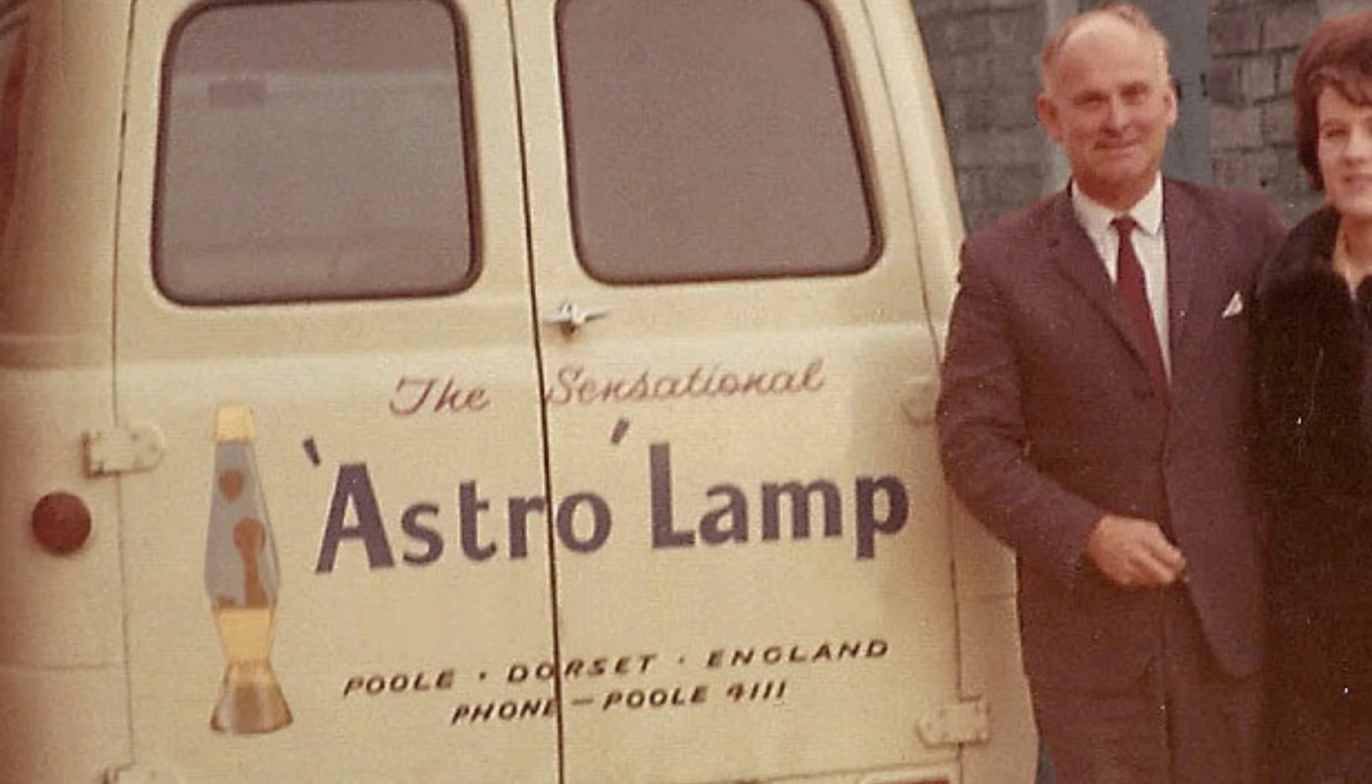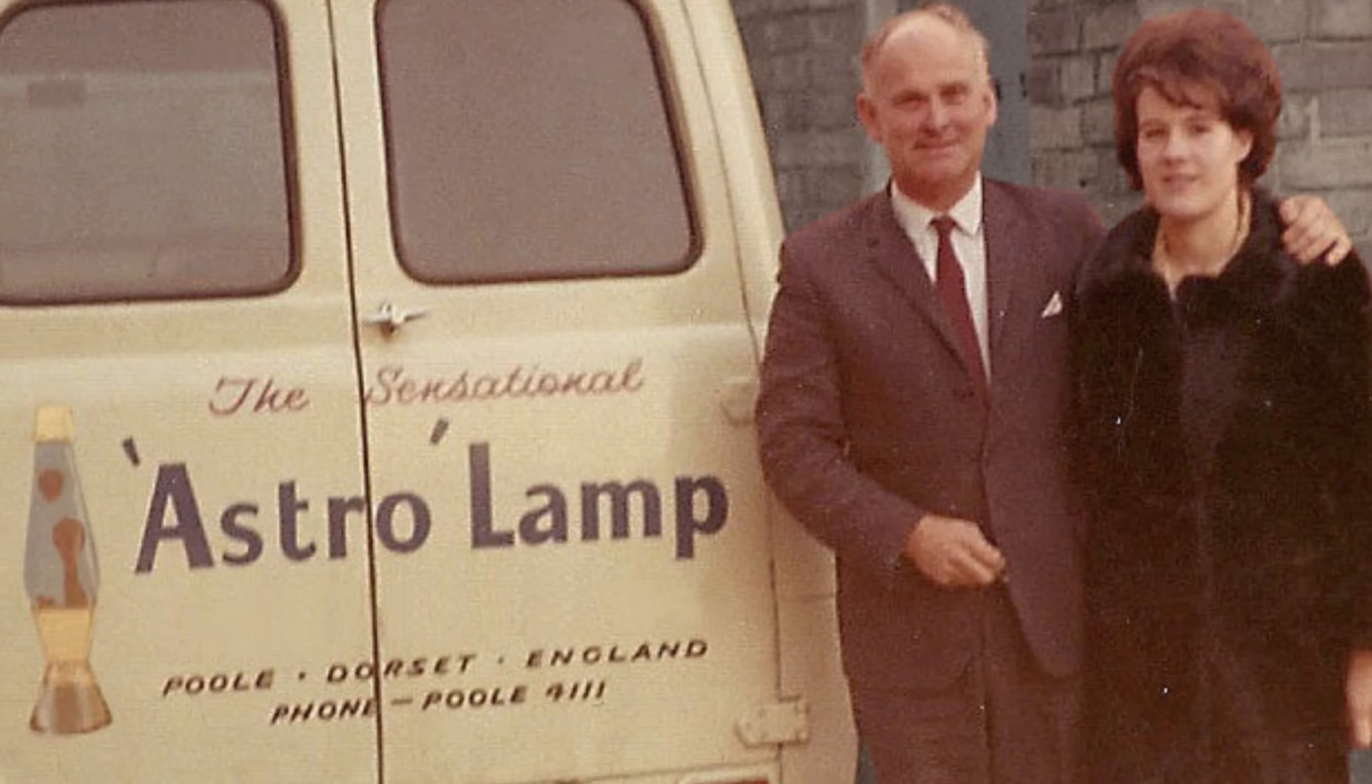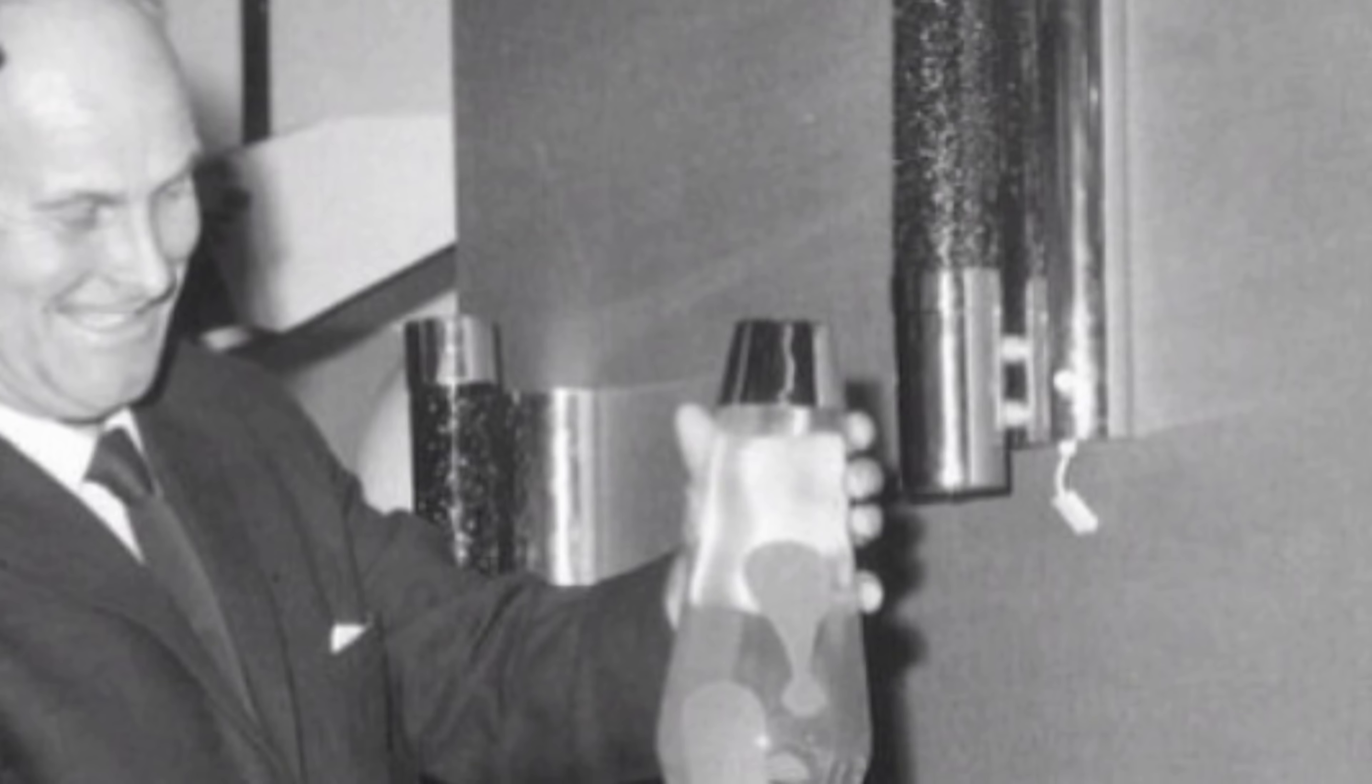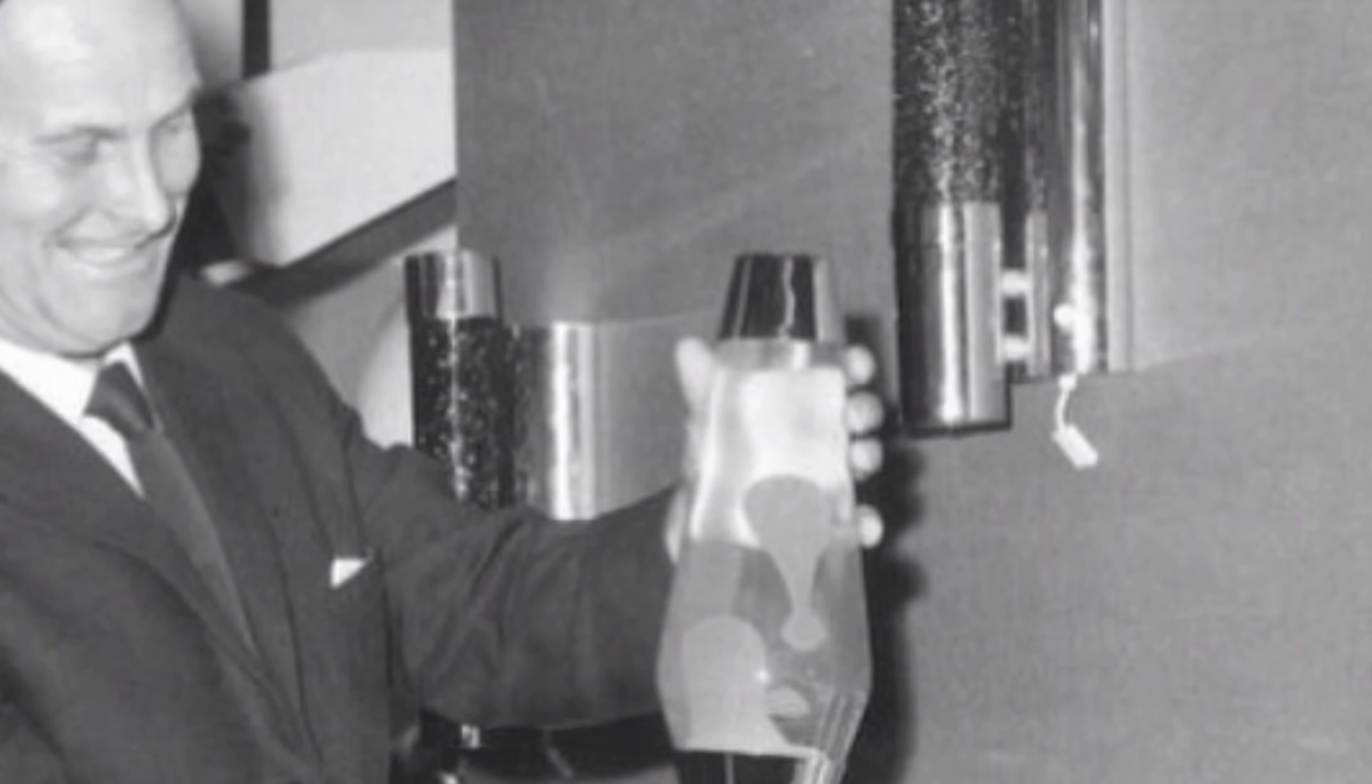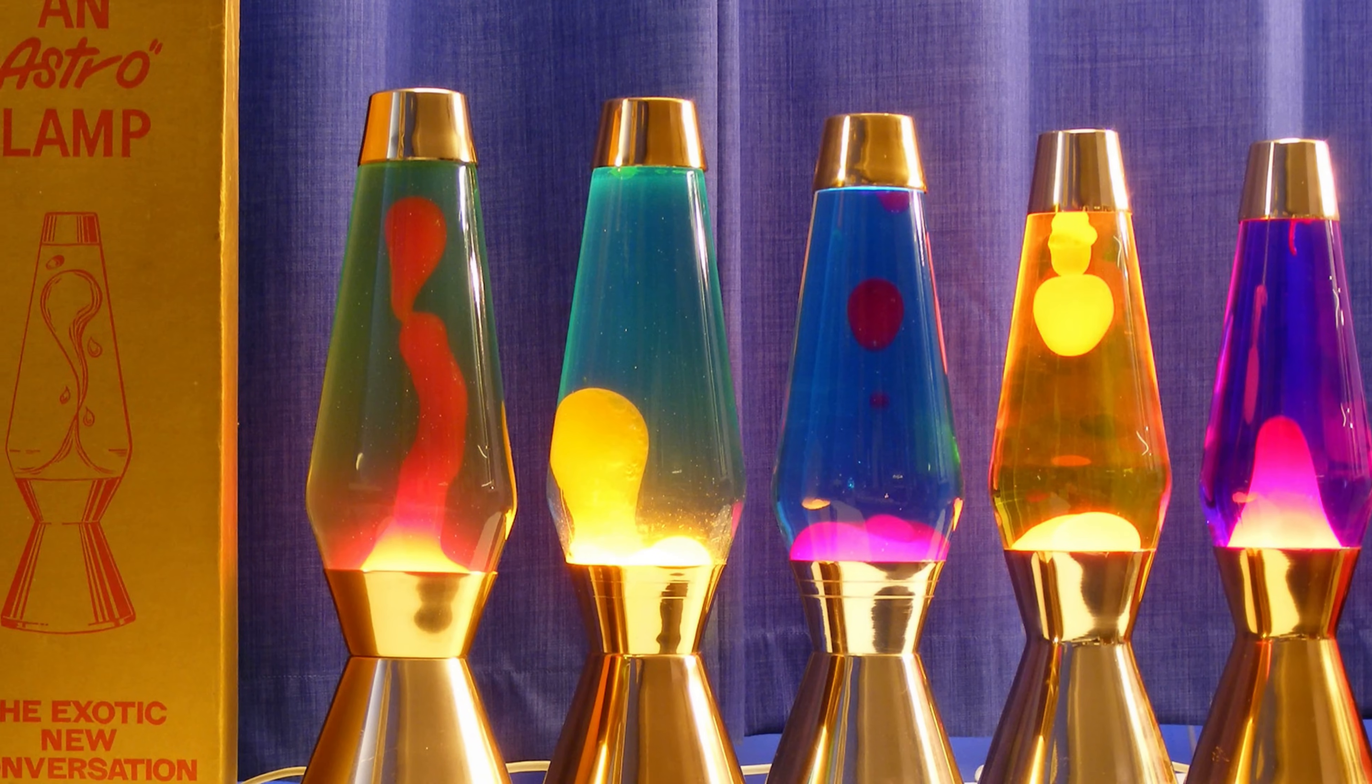After years of experimentation and refinement, Craven Walker developed a commercially viable version and launched it under the name Astrolamp. It wasn't long before it caught the eye of the public, becoming an icon of the psychedelic 60s. But beneath the lava lamp's groovy aesthetics was a careful balance of science, specifically heat transfer, fluid dynamics, and density manipulation, all encased in a simple glass tube.